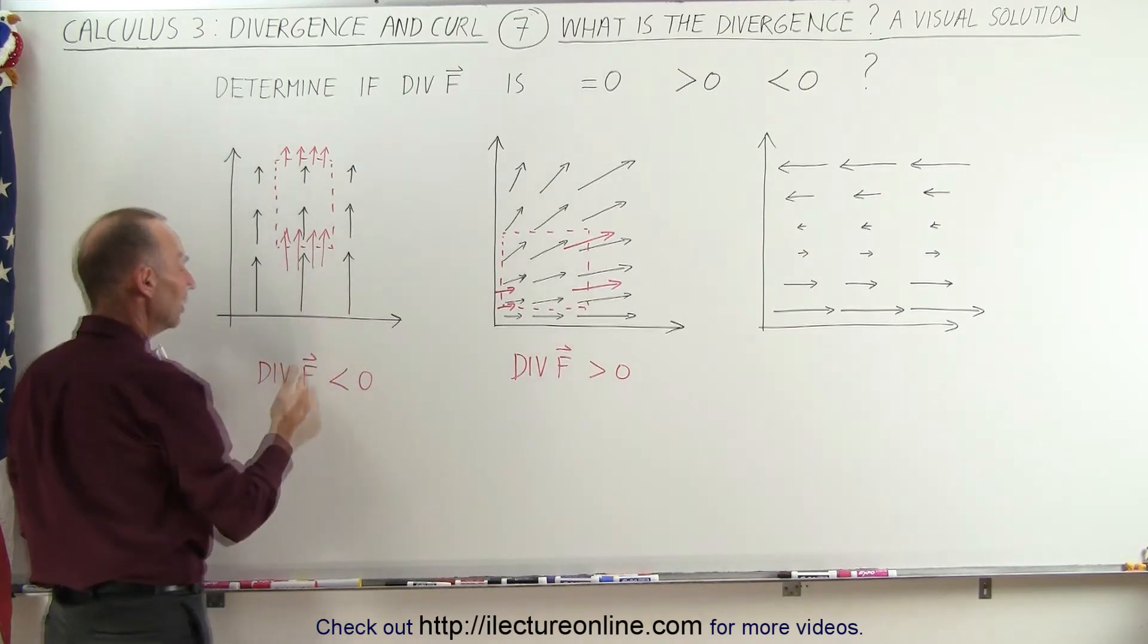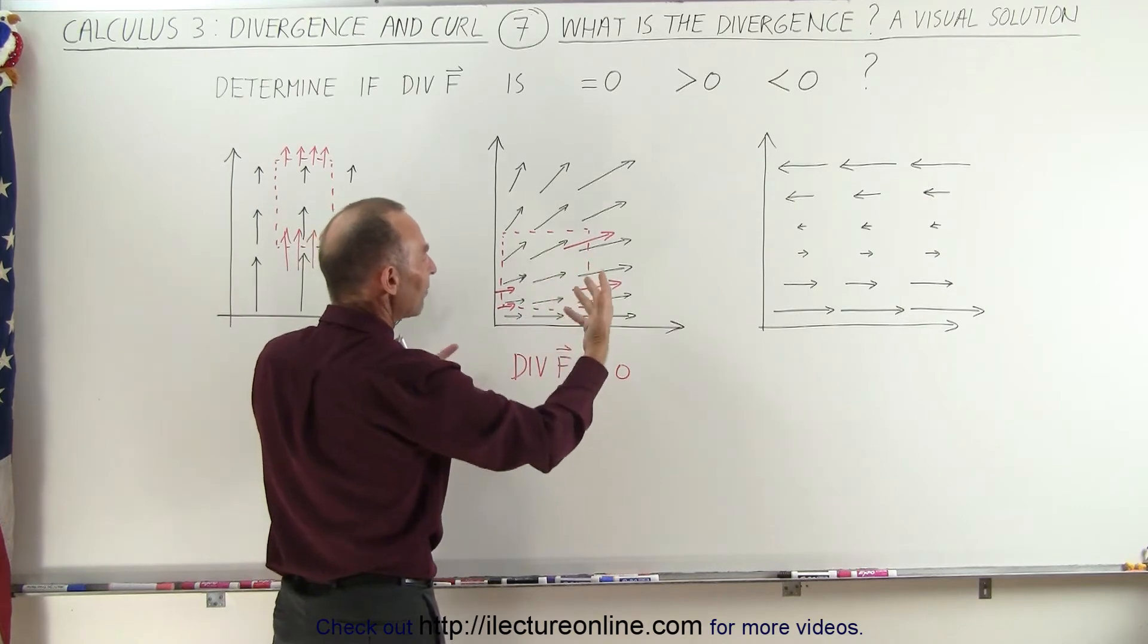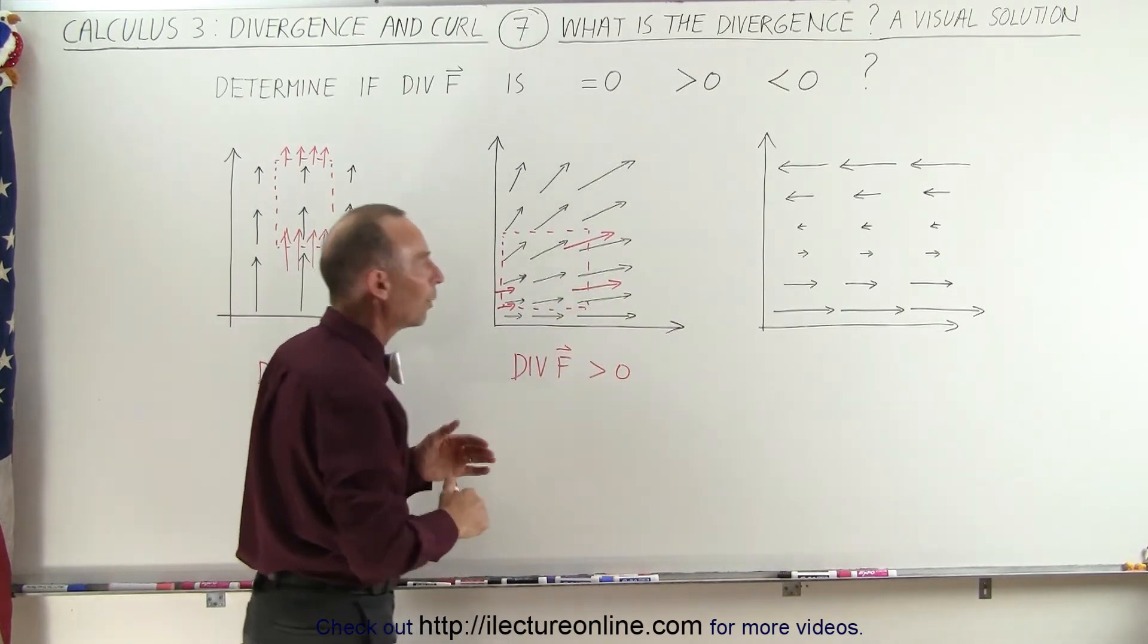So here we're losing flux. The divergence is less than zero. And here we are gaining flux, creating flux, so the divergence is greater than zero.